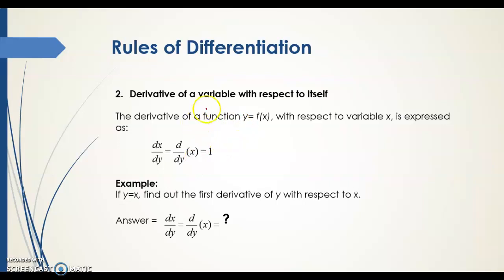The second rule is the derivative of a variable with respect to itself. If y is a function of x, meaning y = x, then the derivative is 1. This means whenever there is a change of 1 in x, y also changes by 1, so the rate of change is always 1 when y is simply given as x.